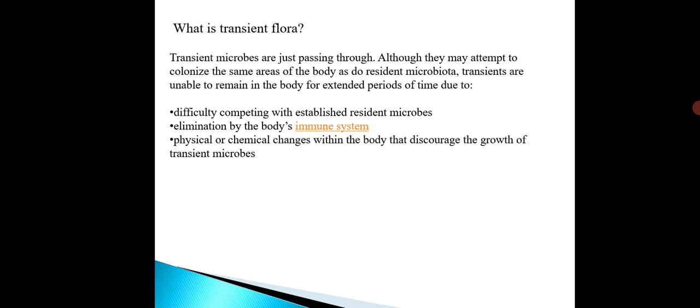Additionally, physical or chemical changes within the body discourage the growth of transient microbes. Our body undergoes some physical, chemical, and biological changes, and the pathogenic organism cannot adapt to those changes, so it escapes naturally from the body. Transient flora is temporary flora not present in our body forever; if it is present, it may lead to infection. Normal flora is like a local population that does not cause disease unless the body conditions turn against it. That is the difference between transient flora and normal flora.